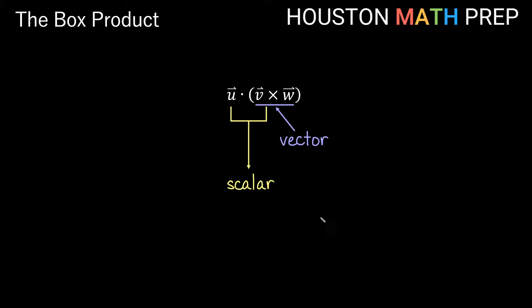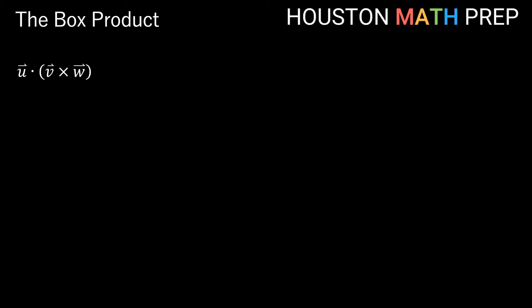Now you can see if we get a scalar, you can see the full story on why this box product is also called the triple scalar product. You could obviously just do this box product by first taking v cross w, figuring out that vector, and then taking u dot whatever you get — so you could do two operations. But we're going to show you a nice little shortcut that you can use to do this all in one go.